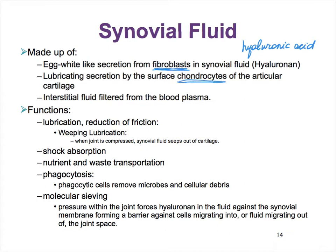This is mixed with a secretion produced by the chondrocytes—the cartilage cells from the articular cartilage. And then most of the fluid is really just filtered blood plasma. So all three of these things form our synovial fluid.